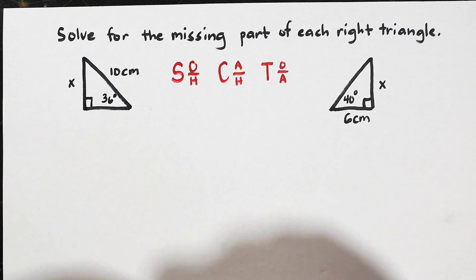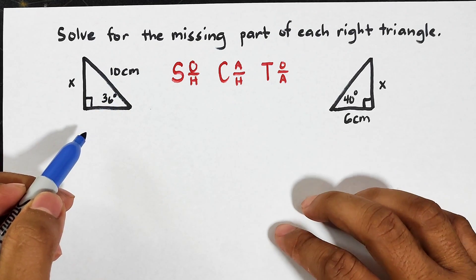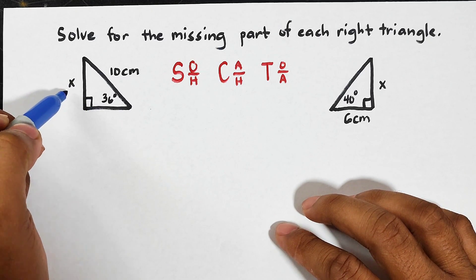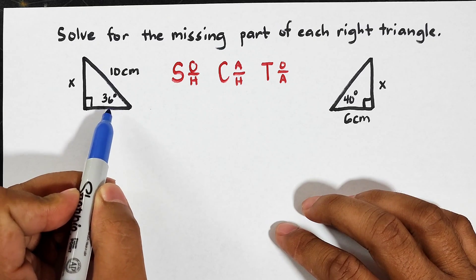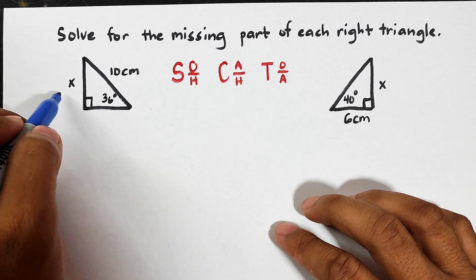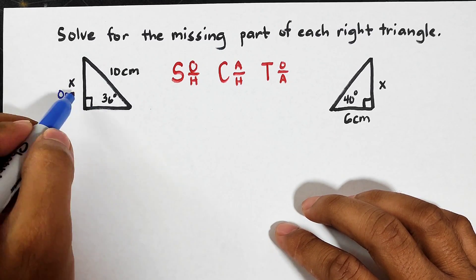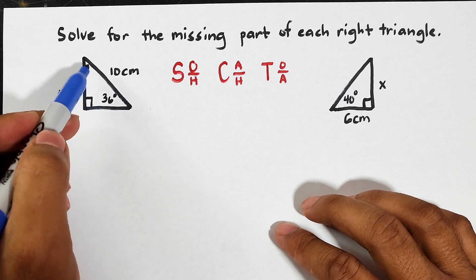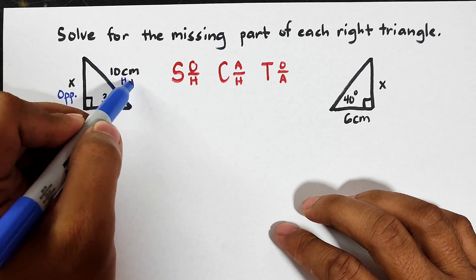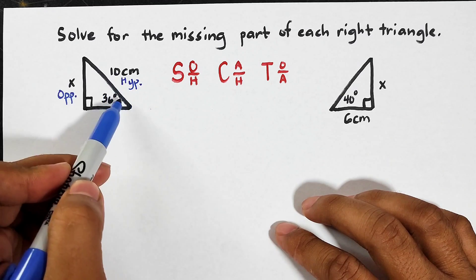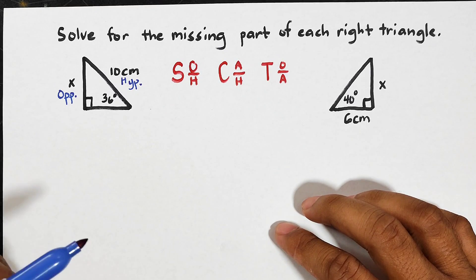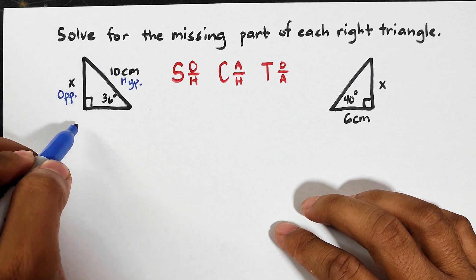Let's go with the first example. This is a given right triangle and what we have here is an acute angle of 36 degrees. With respect to that acute angle, the missing side x is the opposite side, and the side that measures 10 centimeters is the hypotenuse because it is opposite to the right angle.